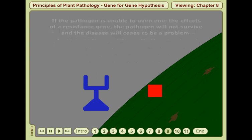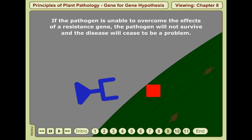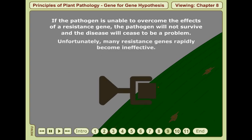If the pathogen is unable to overcome the effects of a resistance gene, the pathogen will not survive and the disease will cease to be a problem. Unfortunately, many resistance genes rapidly become ineffective.